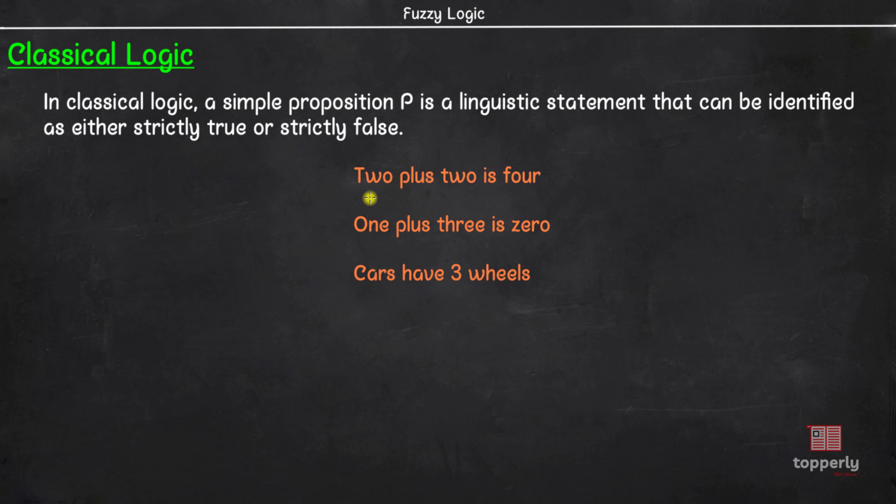So, we can assign the truth of first proposition as T of P equal to 1. Also, since these two statements are false, we can say that T of P is equal to 0 for both these statements. Here, P stands for proposition and T stands for truth.